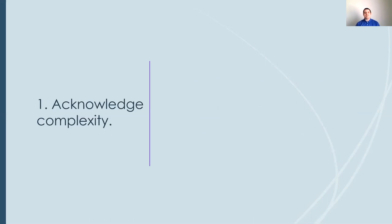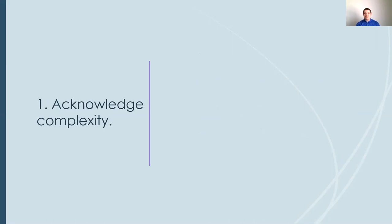Let me go through these five practices. The first one is to acknowledge complexity. The basic idea — and it should be clear to anyone who studies science for a living — is that any single thing we study is way more complicated than we realize, especially things created by human beings: arguments, texts, models, equations. Because we are messy critters. This means we're never going to have a perfect view of any issue. No matter how strong your opinions are, there's always going to be something about the issue that you haven't considered, and there are going to be blind spots.